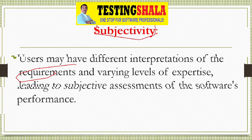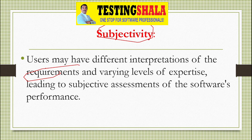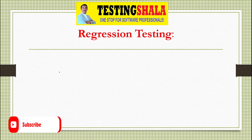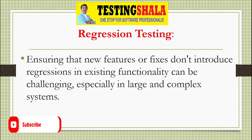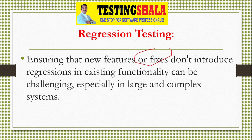The next challenge is regression testing. During UAT, when new features or fixes are introduced, the limited number of users means they may not be able to perform complete regression testing. This is especially problematic for large and complex applications where skipping regression can lead to bigger issues.